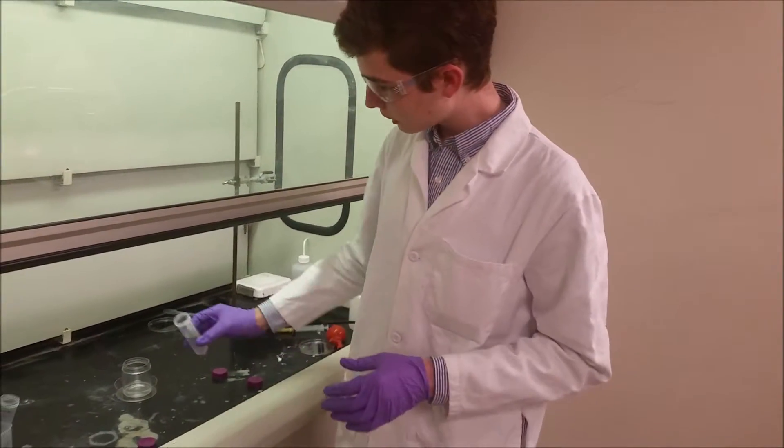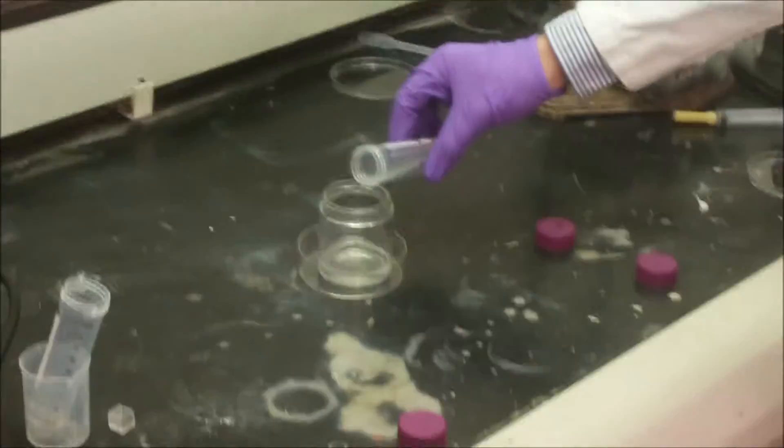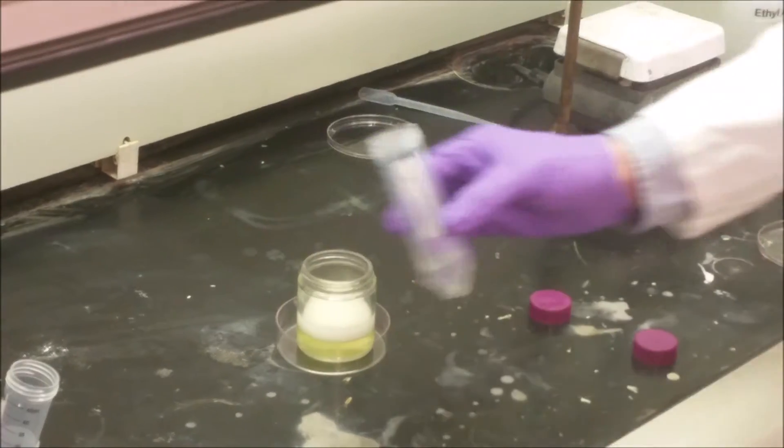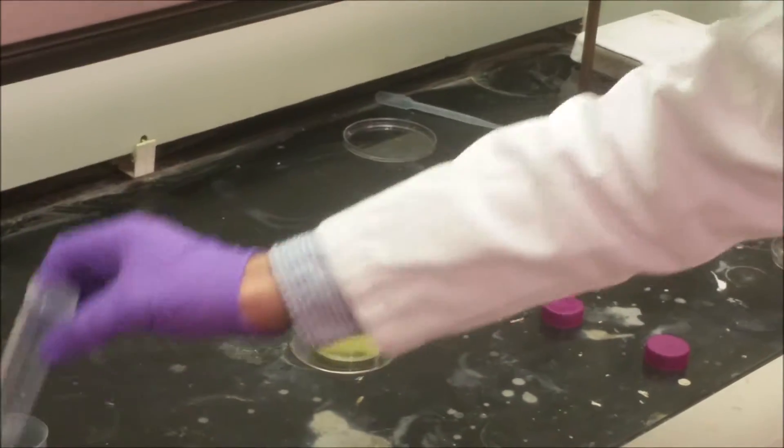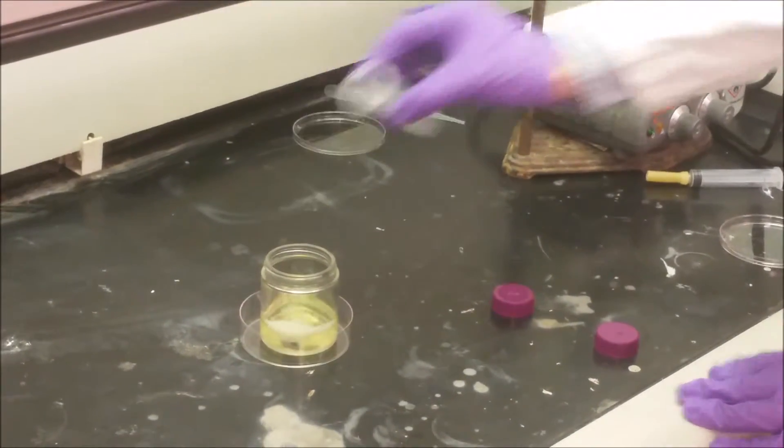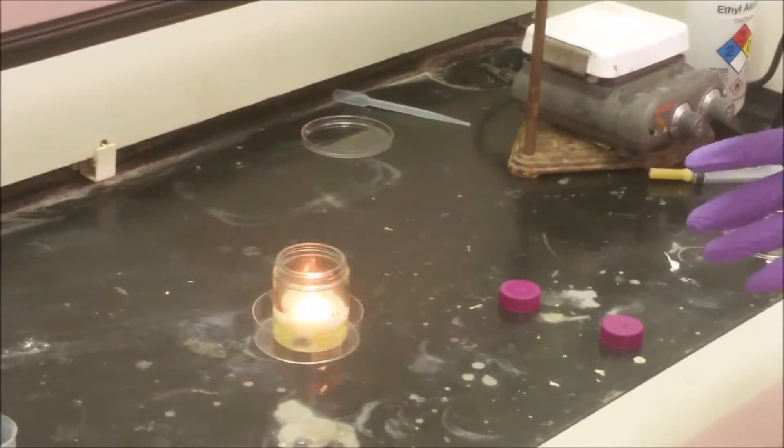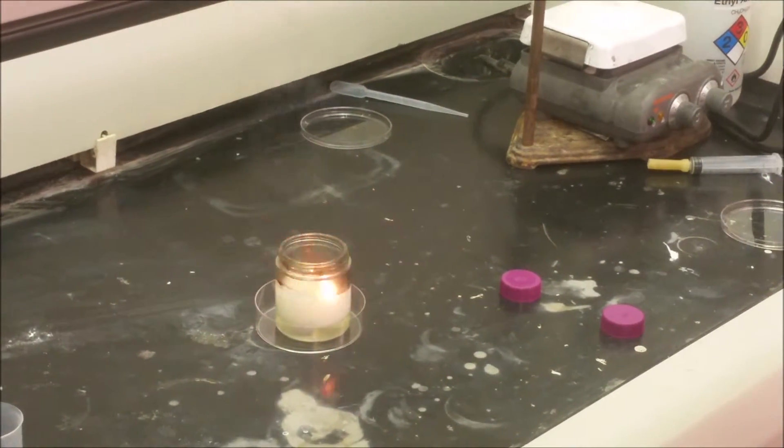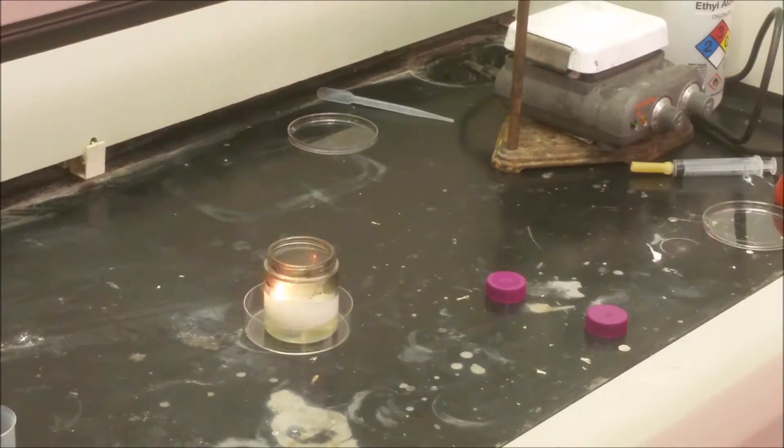When I add the bleach to the hydrochloric acid, you're going to see a lot of fizzing, and it turns green. The reason for that is because it's producing chlorine gas. And if I drop the calcium carbide in, the acetylene it produces will explode spontaneously upon contact with that chlorine gas.